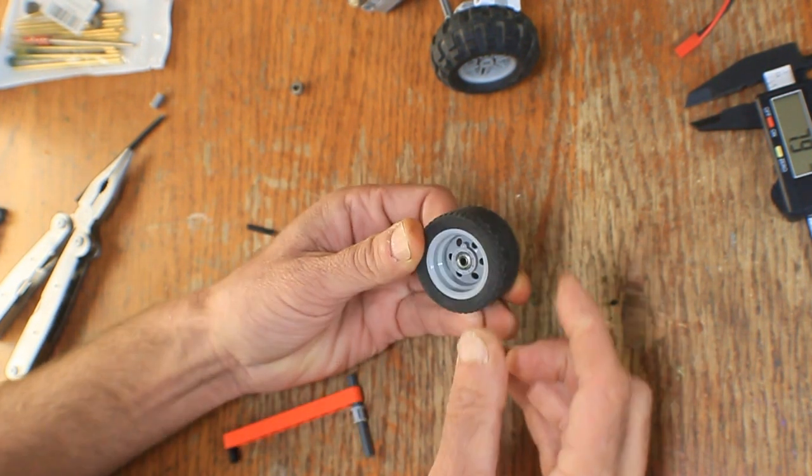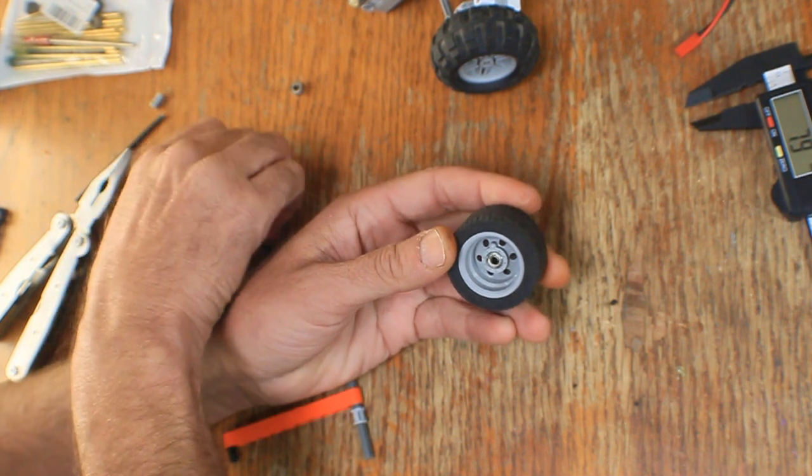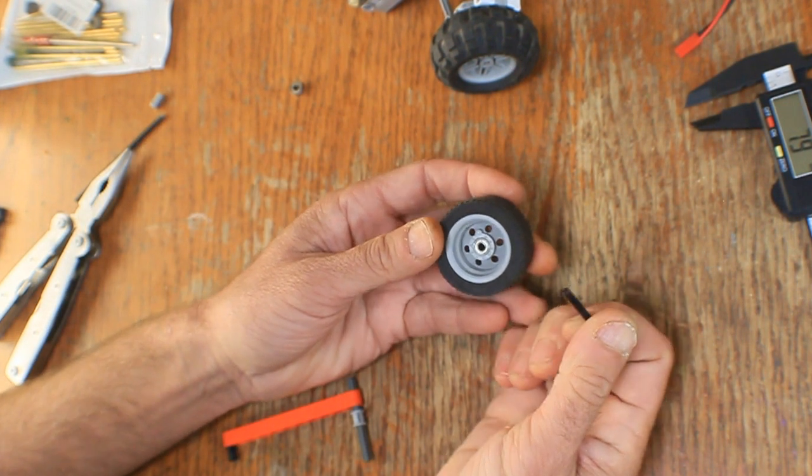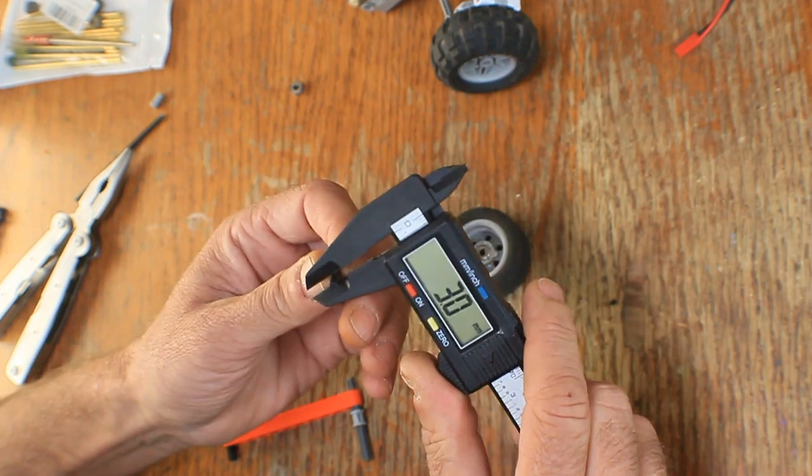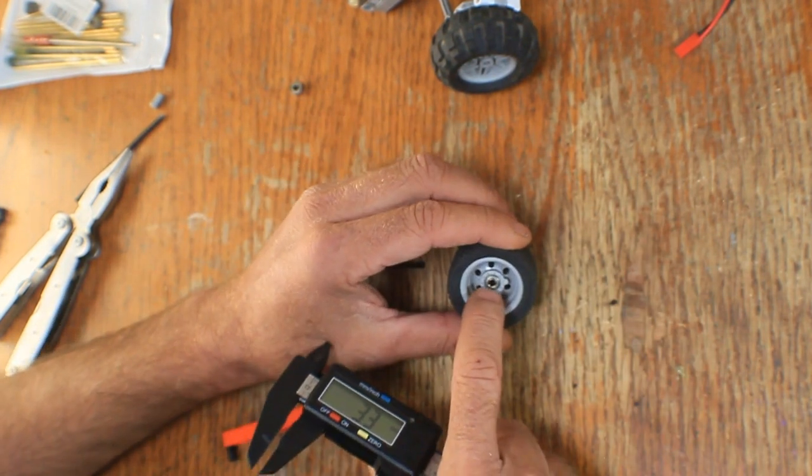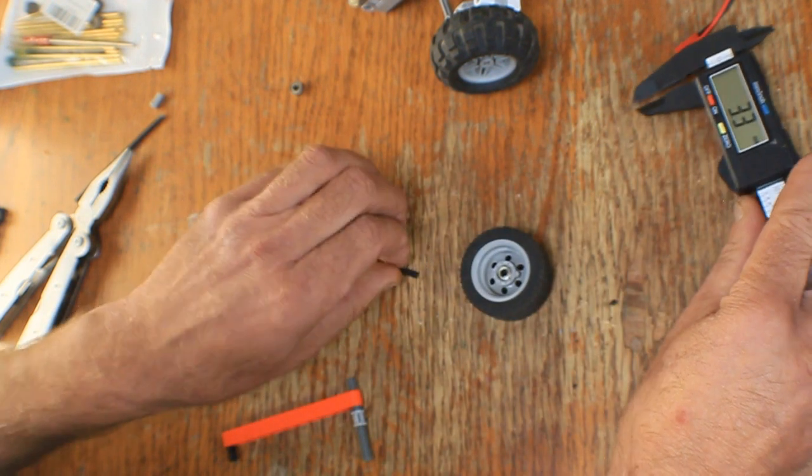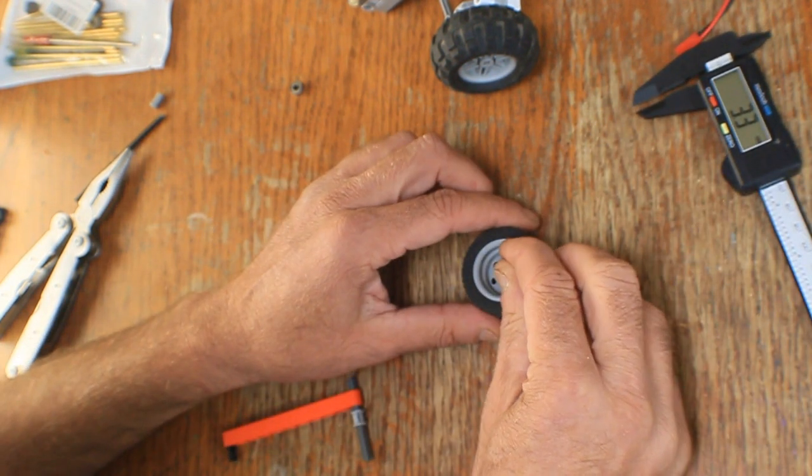Now what you need to get this attached is this carbon fiber rod. It's 3mm in diameter, and the internal diameter of the bearing is 3mm, so that will go nicely in there.